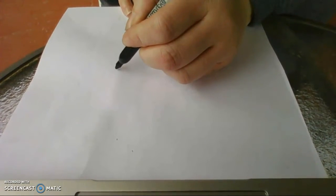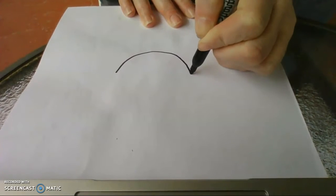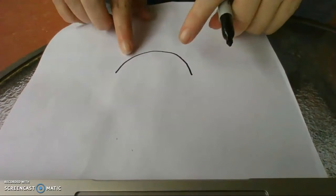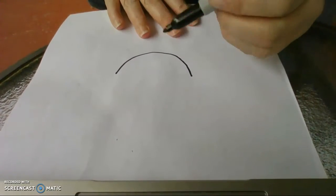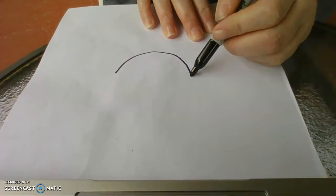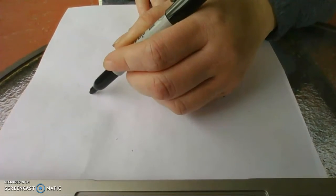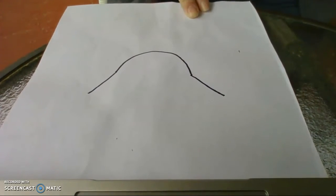So we are getting our black crayon or marker, whatever you have. Then I'm going to make an arch, or a rainbow line, whichever you want to call it. And then from each side at the end of that, I'm going to make a slanted line that goes out. We're making Darth Vader's helmet.